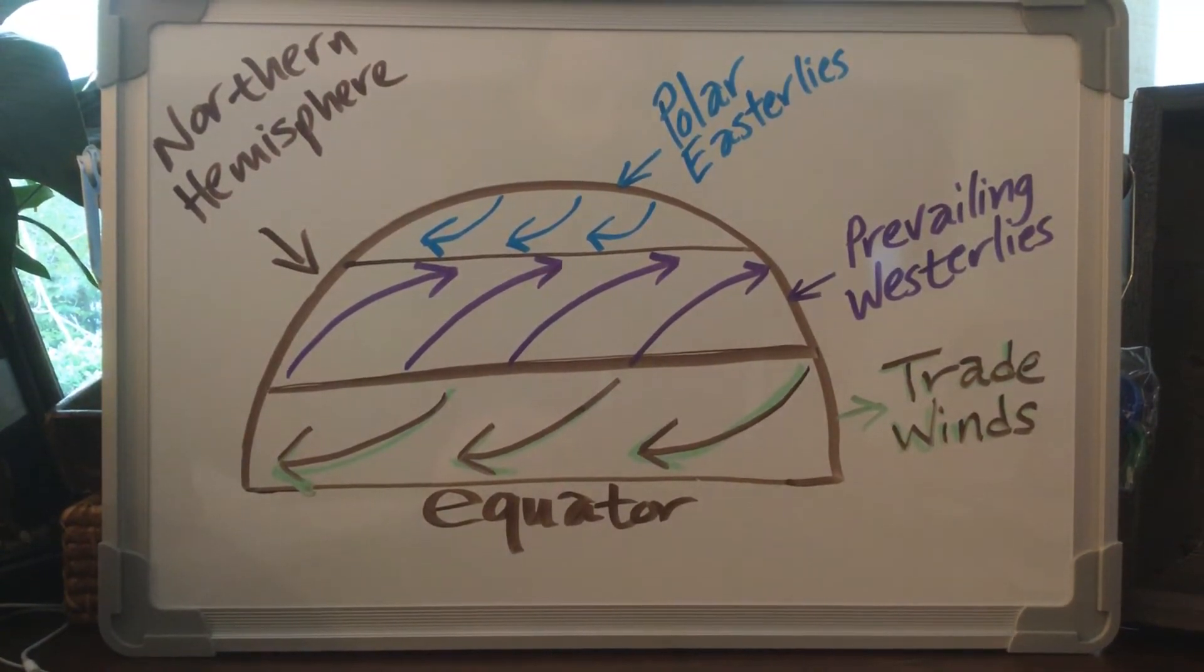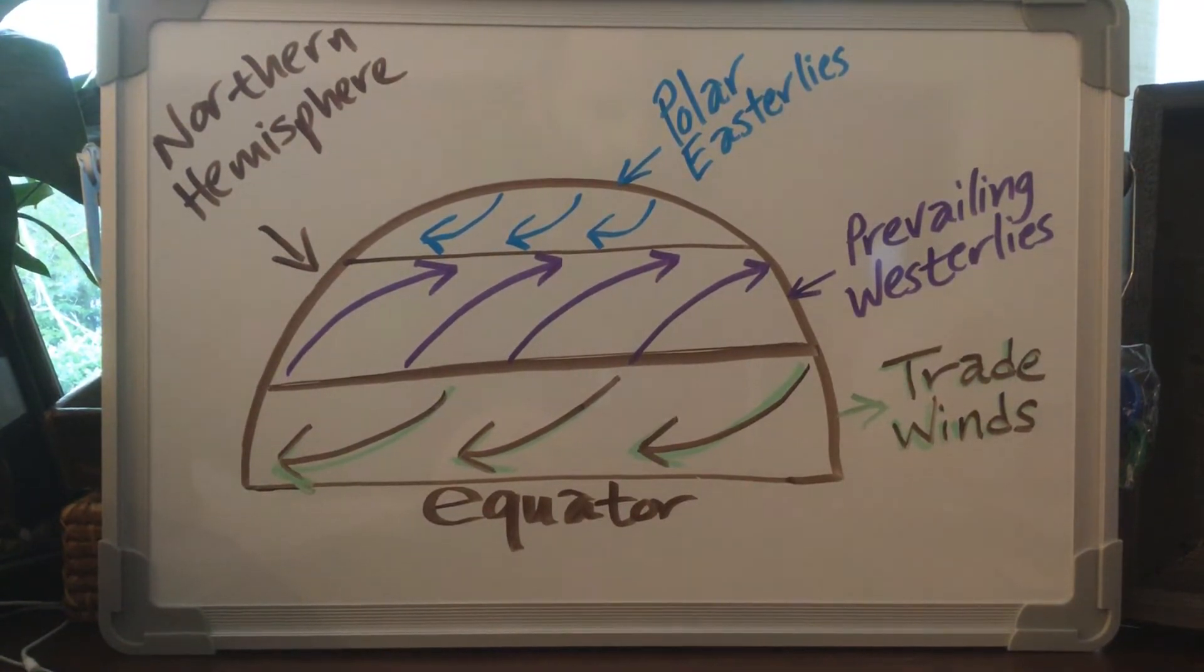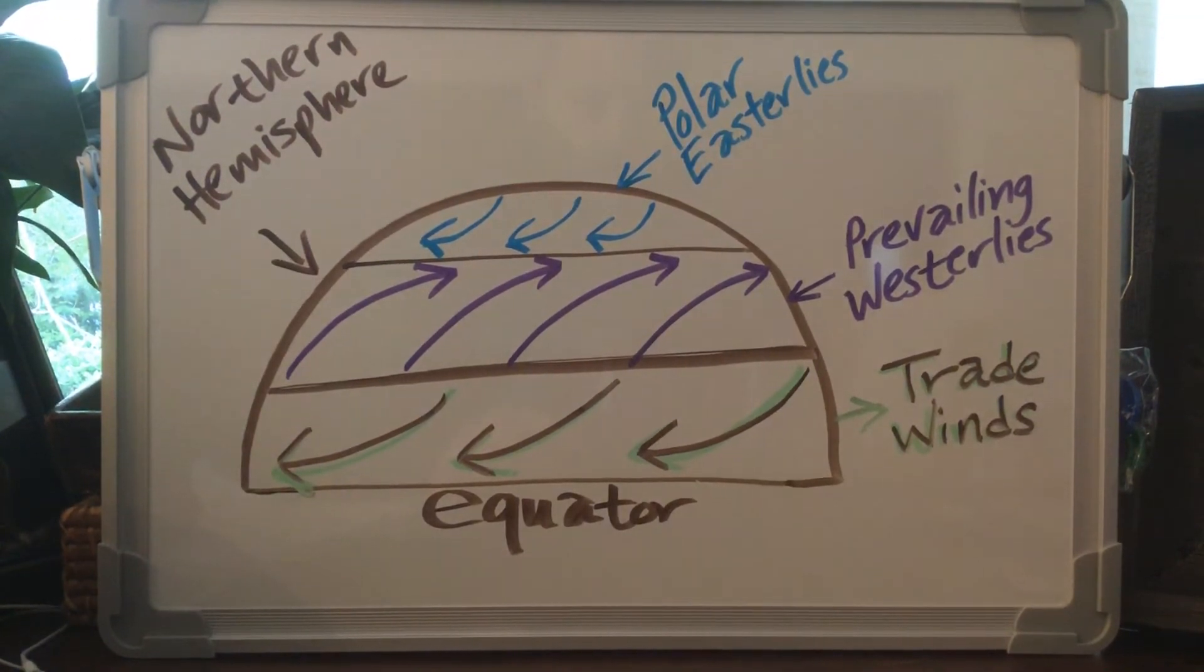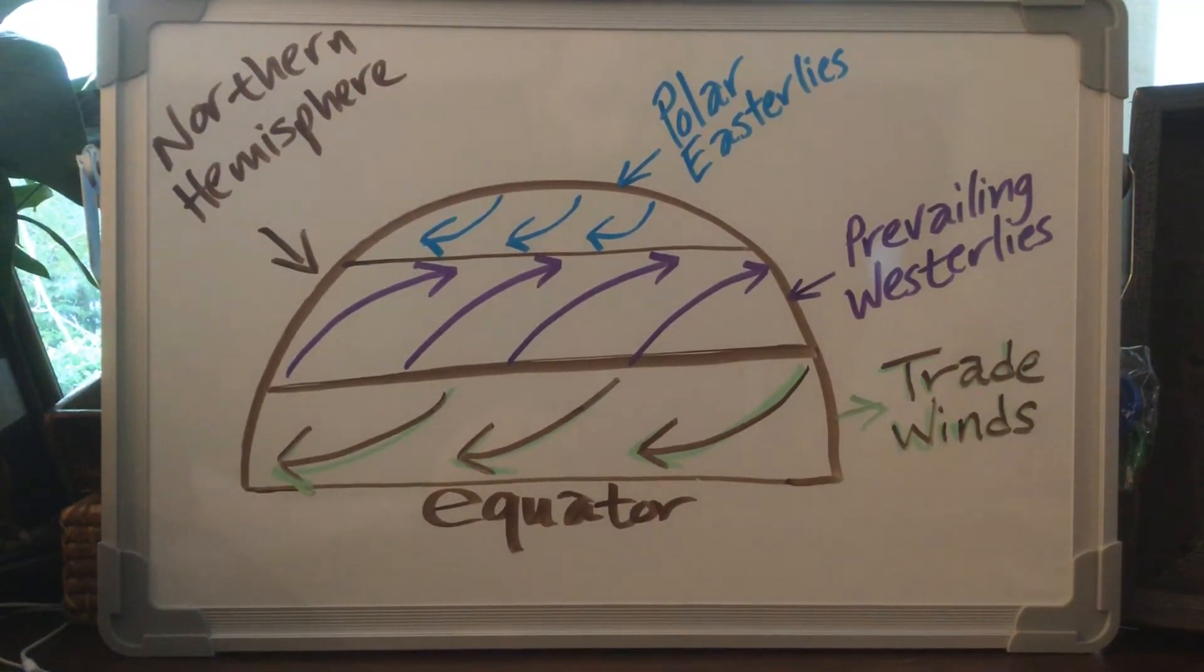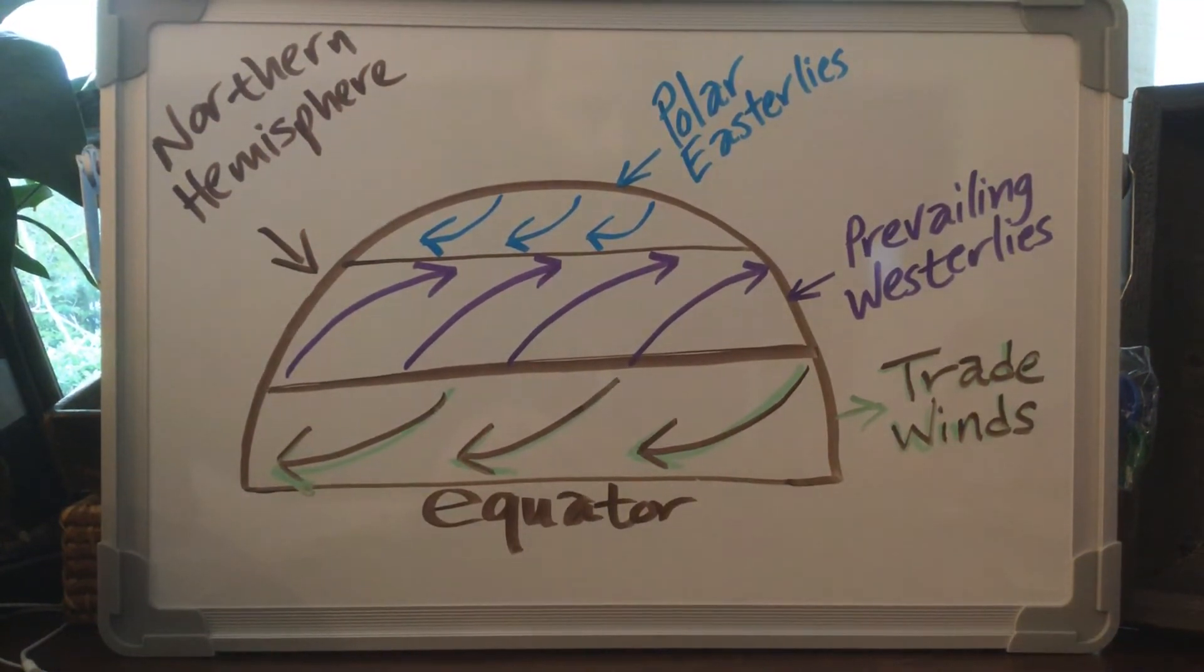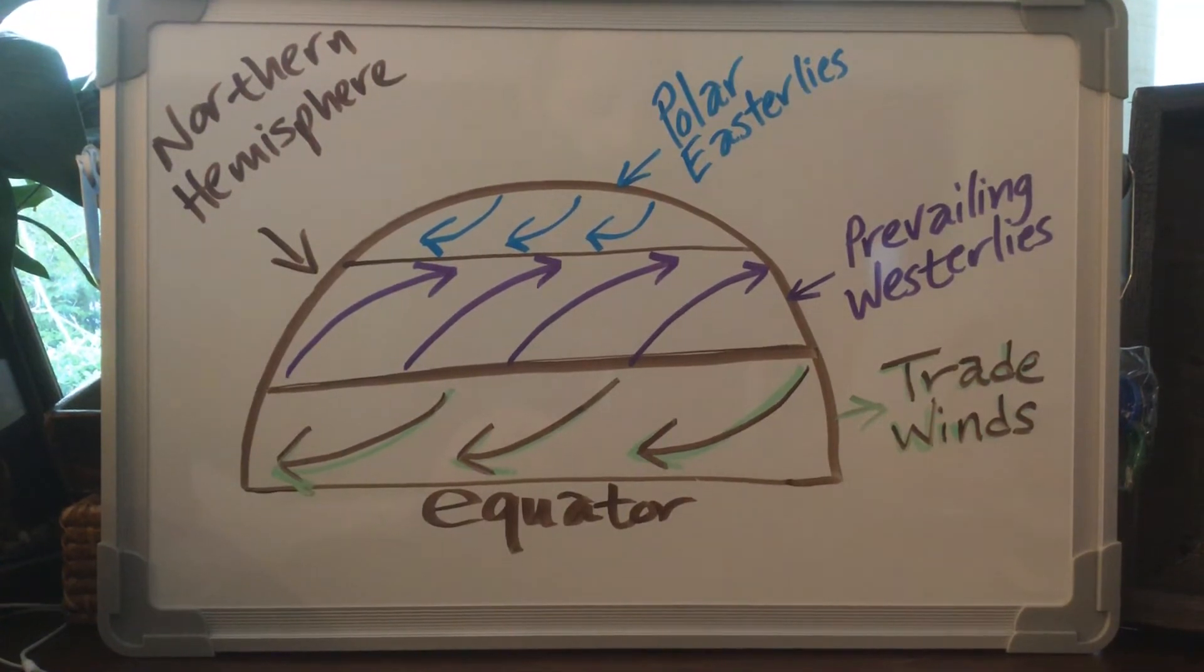The second band up there above the trade winds is going to be the prevailing westerlies. Now that purple area, that middle section, is going to be the winds that blow over us all the time. Now I know we do have a local wind and our local wind blows pretty much every day.